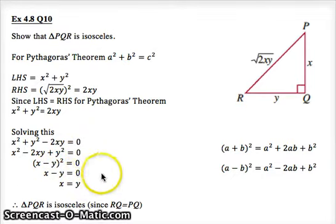Therefore, taking the y over, this minus y, taking it over to the other side, you end up with x equals y. If x equals y on the diagram, we know that PQ equals RQ, meaning that we have an isosceles triangle. Hence, we can say, therefore, triangle PQR is isosceles because RQ is equal to PQ.